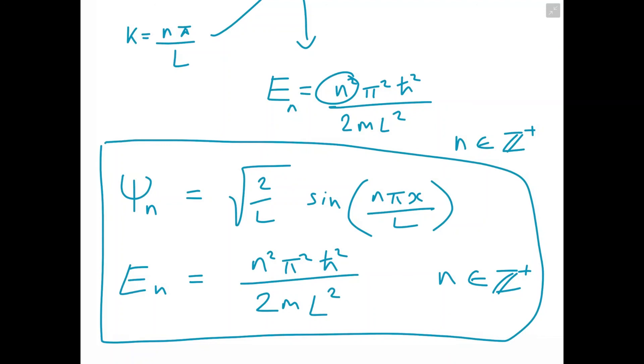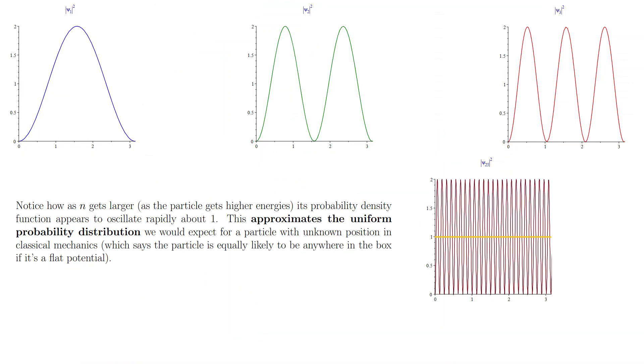We have solved the one dimensional time independent Schrödinger equation. So time independent means it's constant energy. And I'll put up some of the solutions on the screen to show you what the probability distributions look like. And I hope you found this video helpful.